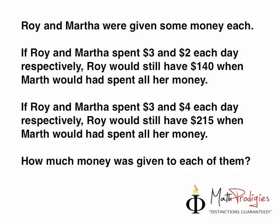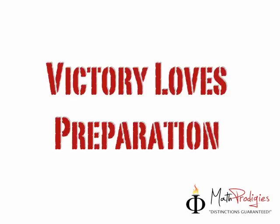Roy and Martha were given some money each. If Roy and Martha spent $3 and $2 each day respectively, Roy would still have $140 when Martha would have spent all her money. If Roy and Martha spent $3 and $4 each day respectively, Roy would still have $215 when Martha would have spent all her money. How much money was given to each of them? Similar question but it looks a little weird because the ratio is $3 to $2 and $3 to $4. I know you can figure it out. All you have to do is make the ratio look the same. Remember, always use step 1: draw the model. This is your question for the day, math prodigies primary 6. I want to end off again with a very important quote: Victory Loves Preparation. With that, you are a math prodigy!